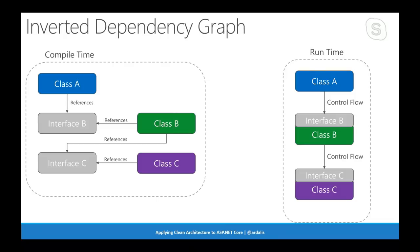If you use the dependency inversion principle, it looks more like this. At compile time you reference an abstraction — an interface. Class A references interface B, and class B might implement it. Class B also references an interface which might be implemented by class C. At runtime your control flow runs through those classes just like before, but now because we have those interfaces, we have seams we can use to break apart how the application is constructed. I can compose it modularly at runtime from different implementations, and I can also use those seams to make the code a lot more easy to test.